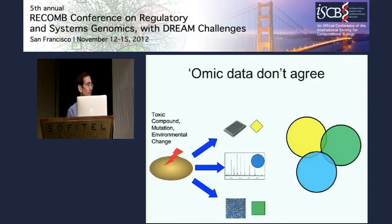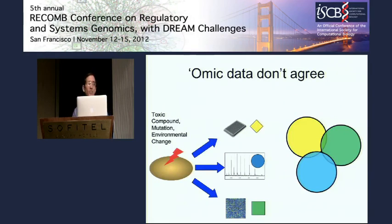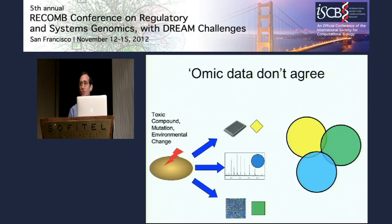The pessimistic view is that each one of these omic technologies is so noisy that that's why you don't get anything significant in the overlap between different technologies. But we know that's not the case because each technology independently is highly reproducible. So it must be that they have some sort of inherent bias that leads you to different sets of genes. And it's not just different lists of genes — usually the gene ontology categories that you get are also completely different.